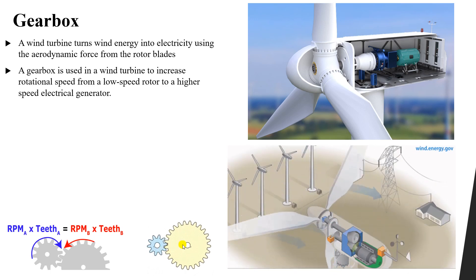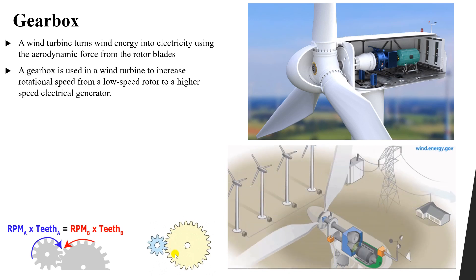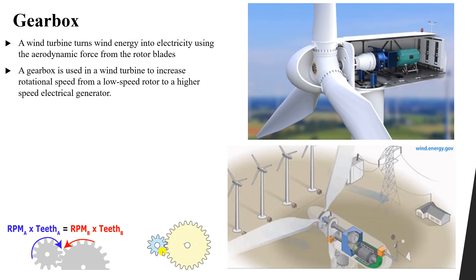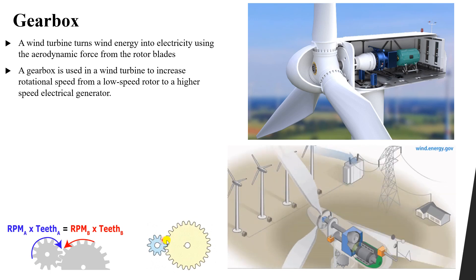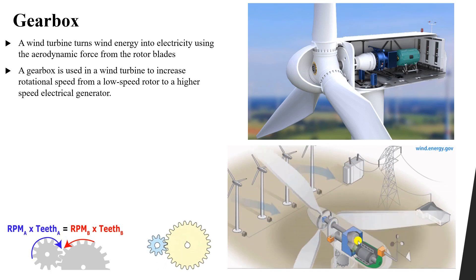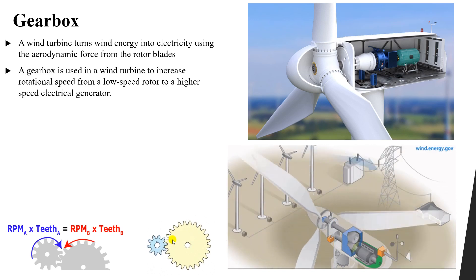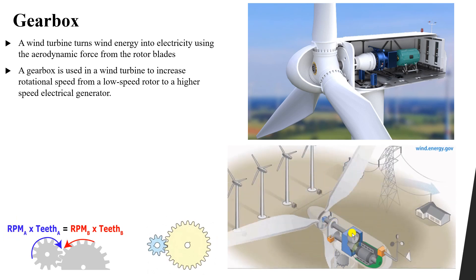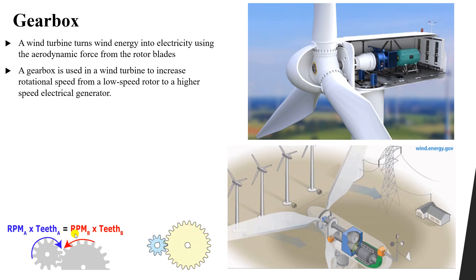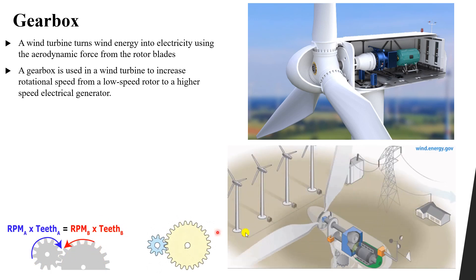How does it work? Simply, we have two gears inside: one which has a very small velocity and a very large number of teeth, and another gear which has a small number of teeth. The ratio between these two provides us a larger RPM. The power input to this gear is equal to the power output with some losses. So the speed of the first gear multiplied by its number of teeth is equal to the speed of the second gear multiplied by its number of teeth.